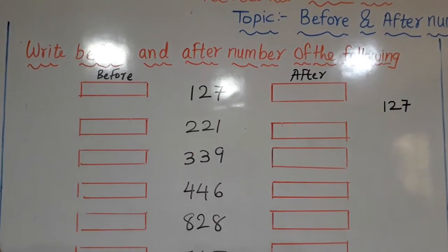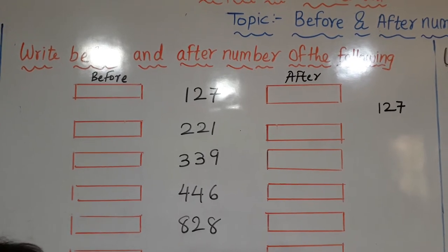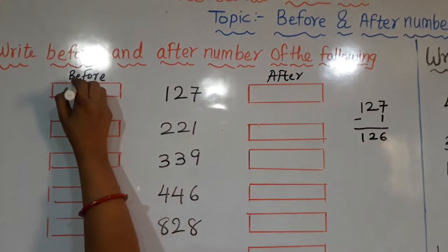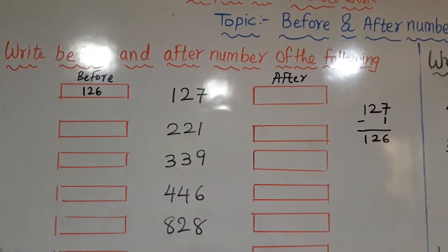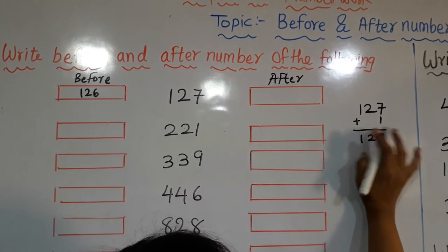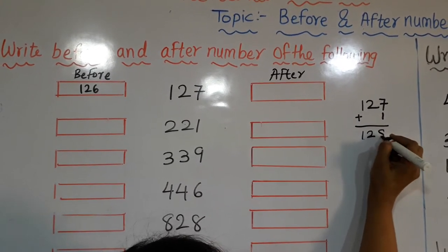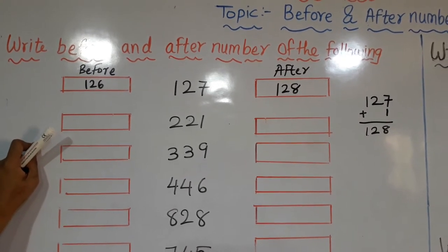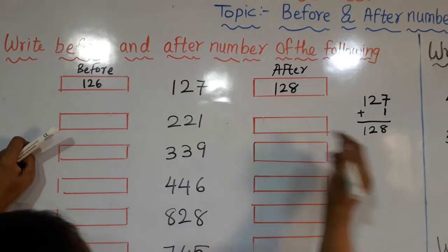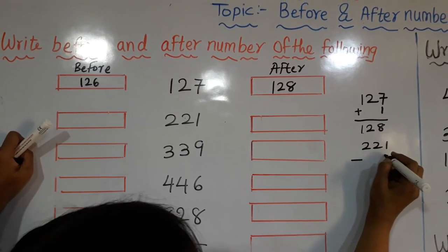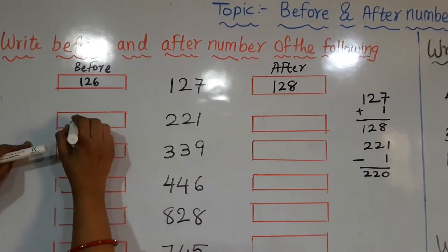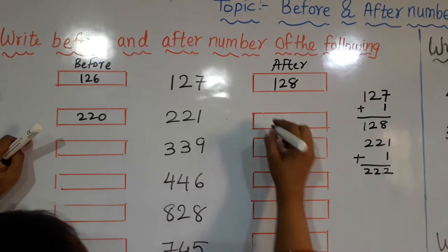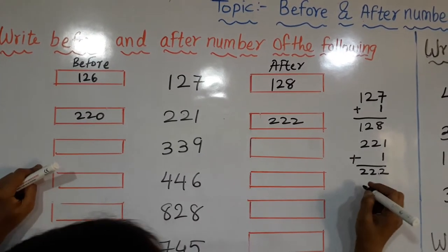For the number 127: to find the before number, subtract 1, which gives 126. So you write 126 for the before number. And to write the after number, add 1, which gives 128. For the next example, 221: subtract 1 gives 220, which is the before number. And add 1 gives 222 for the after number.